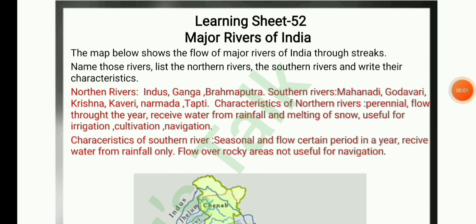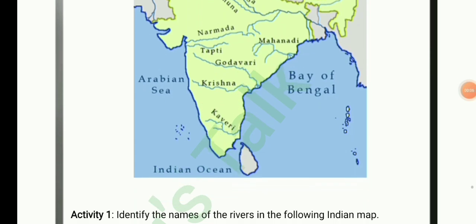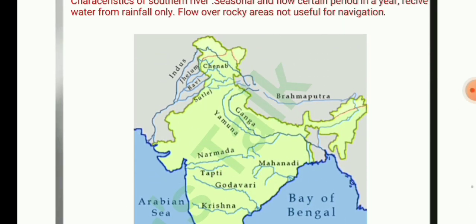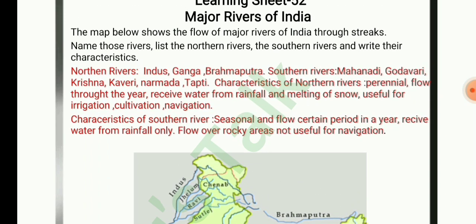Learning Sheet 52: Major Rivers of India. Observe the map showing the flow of major rivers. Northern rivers: Indus, Ganga, and Brahmaputra. Southern rivers: Mahanadi, Godavari, Krishna, Kaveri, Narmada, and Tapti. Characteristics of Northern rivers: they are perennial, flow throughout the year, receive water from rainfall and melting of snow, and are useful for irrigation, cultivation, and navigation. Characteristics of Southern rivers: they are seasonal, flow for a certain period in a year, receive water from rainfall only, flow over rocky areas, and are not useful for navigation.